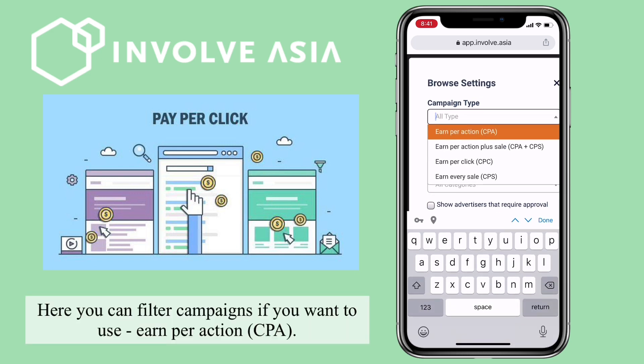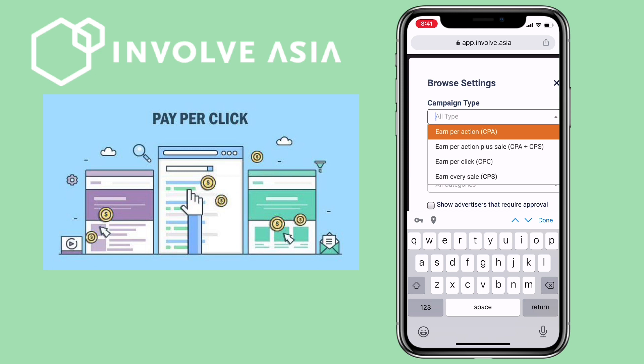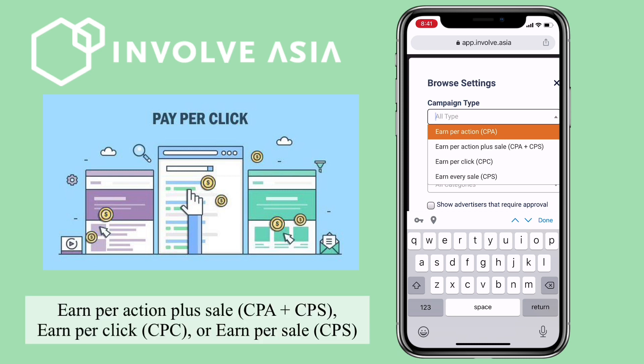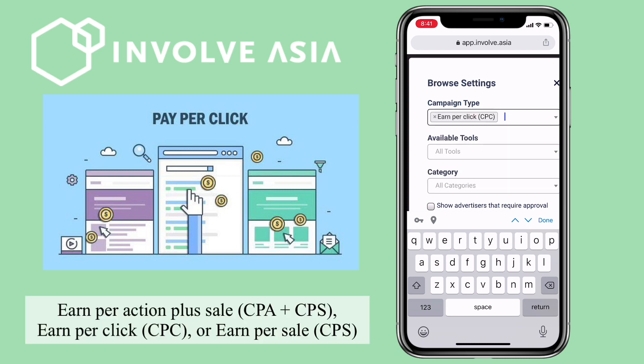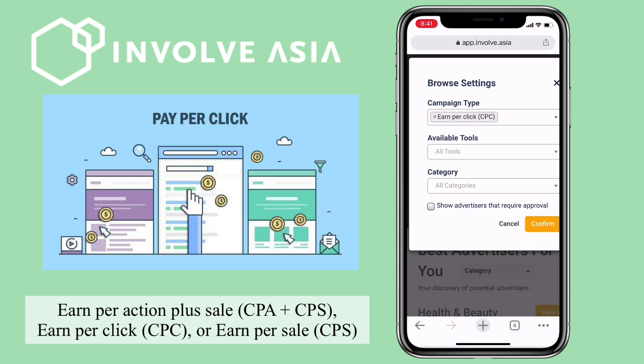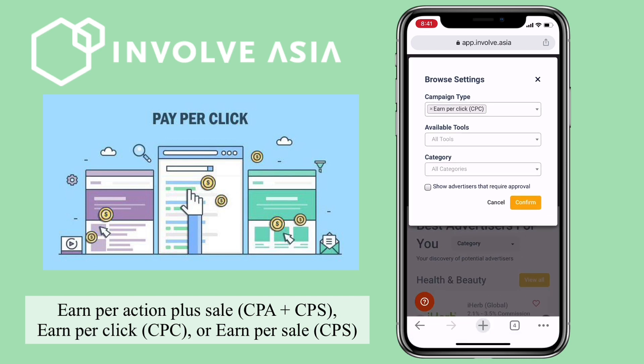Here you can filter campaigns if you want to use earn per action, earn per action plus sale, earn per click, or earn per sale.